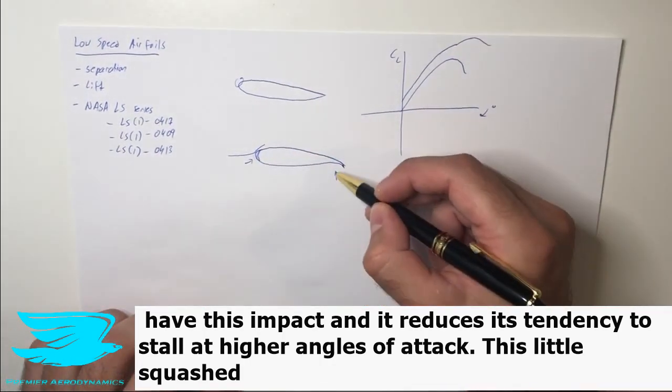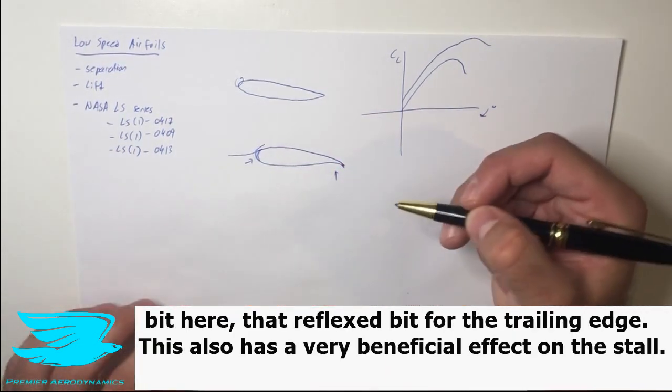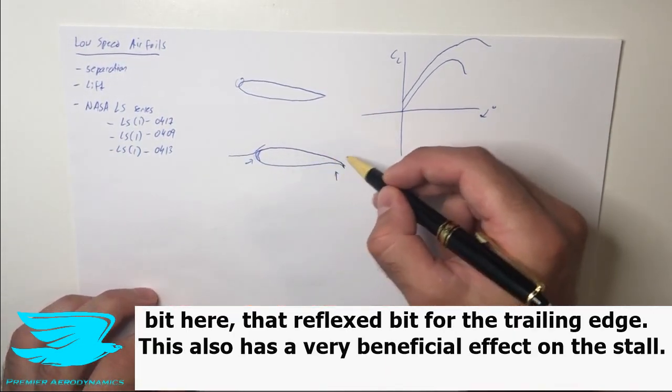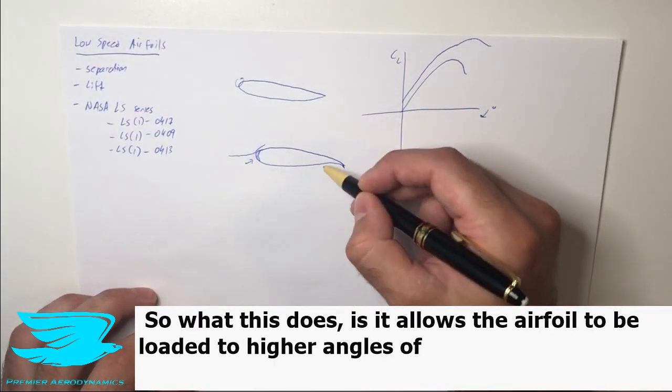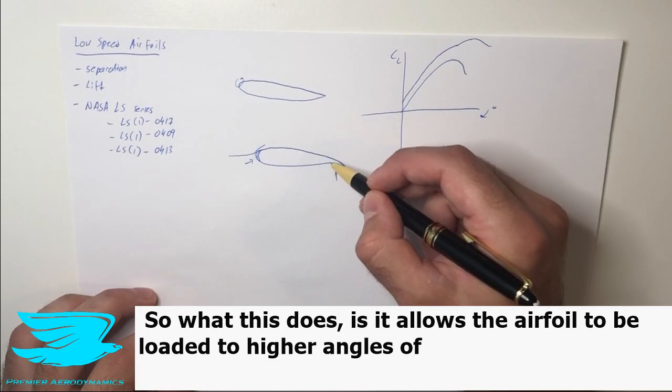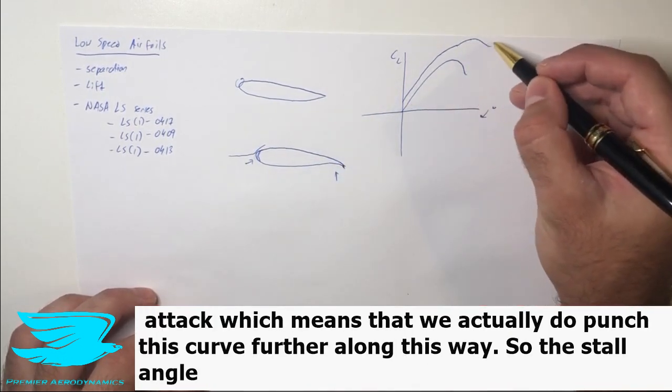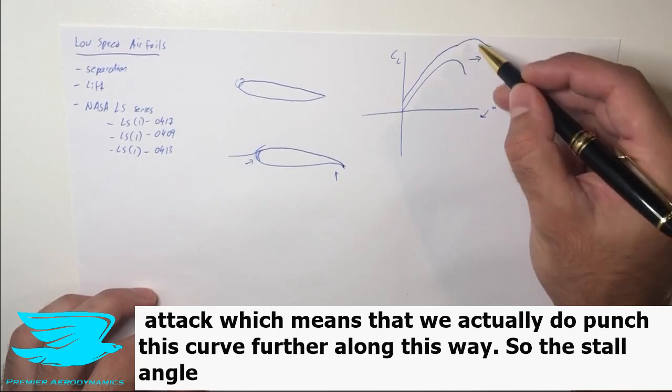This little squash bit here, that reflex bit for the trailing edge, this also has a very beneficial effect on the stall. So what this does is it allows the airfoil to be loaded a great deal more at higher angle of attack, which means that we actually do push this curve further along this way.